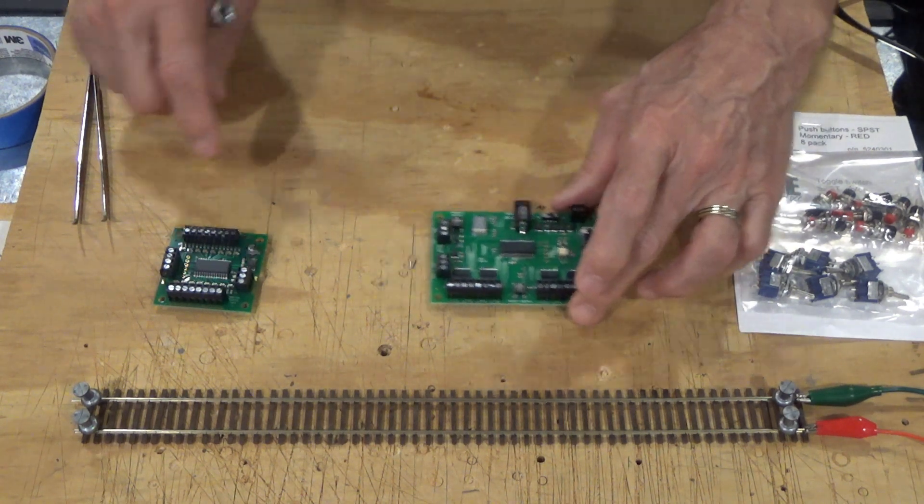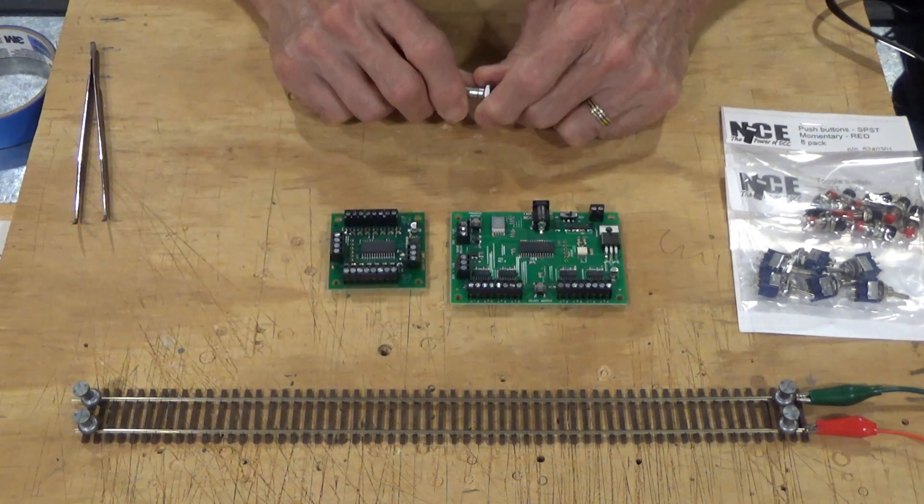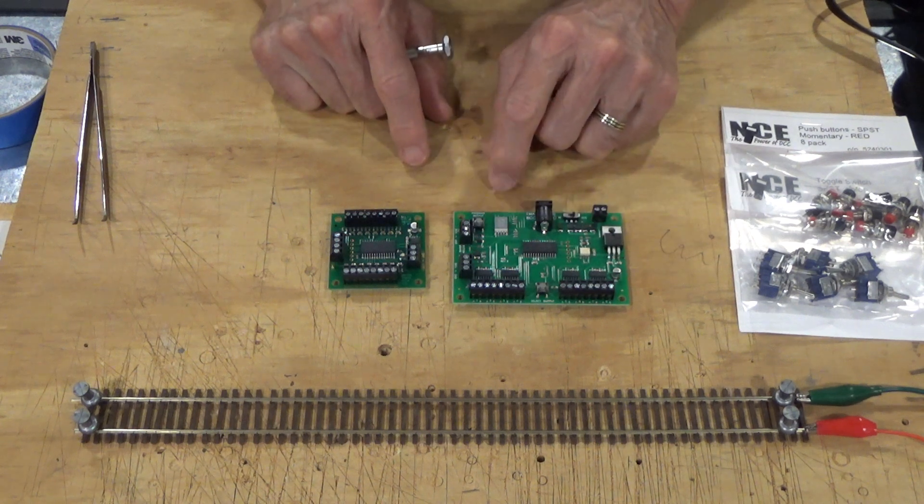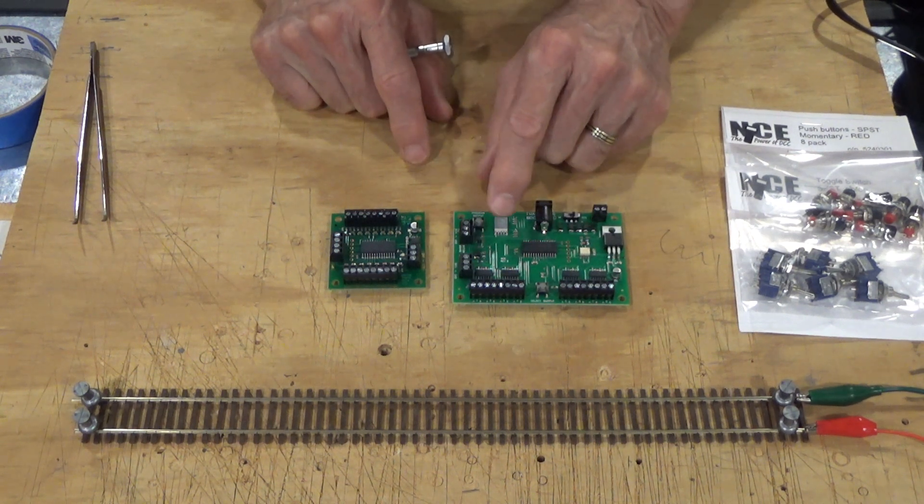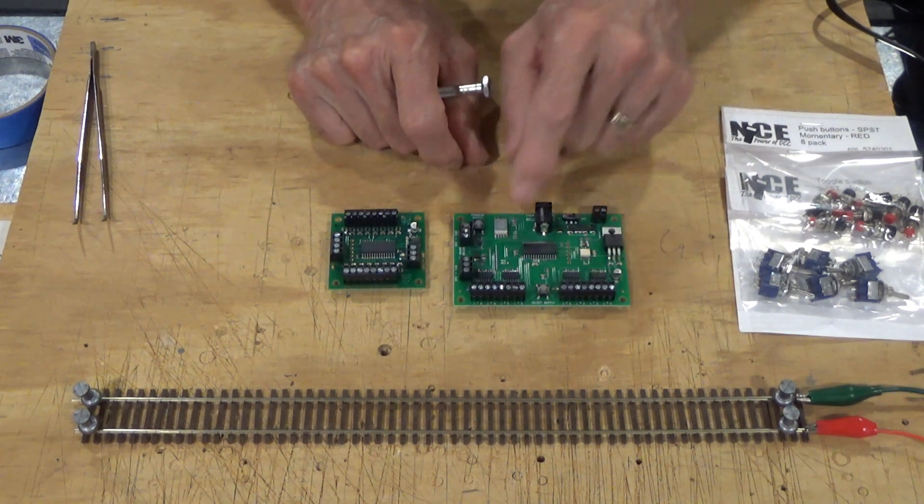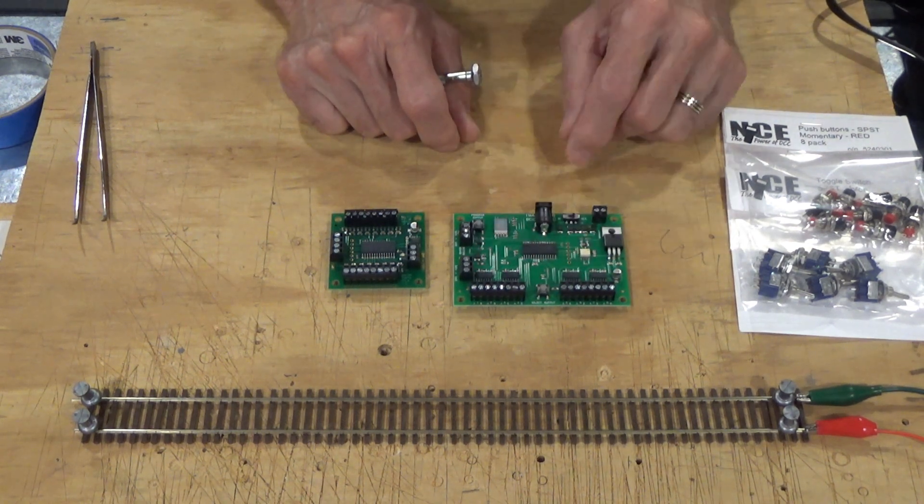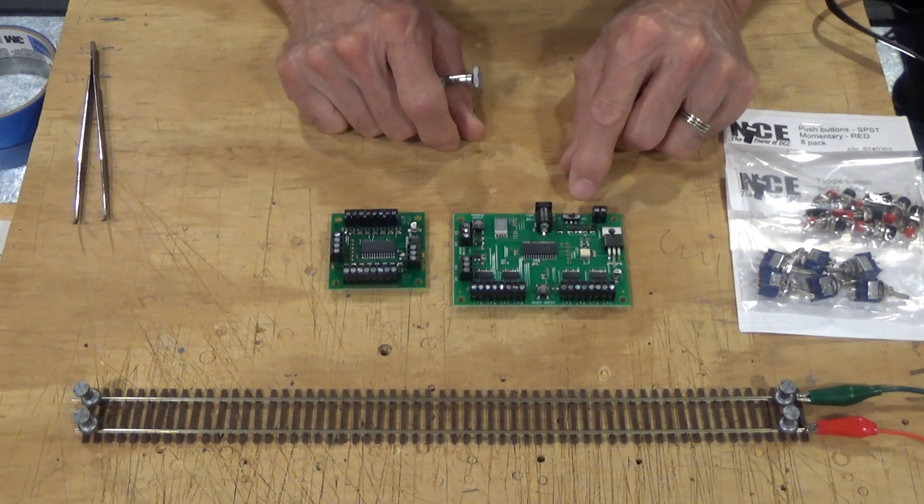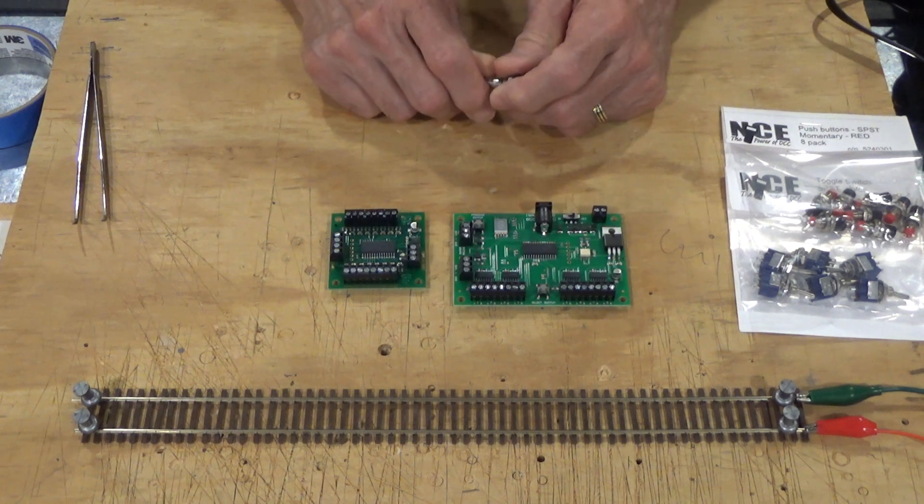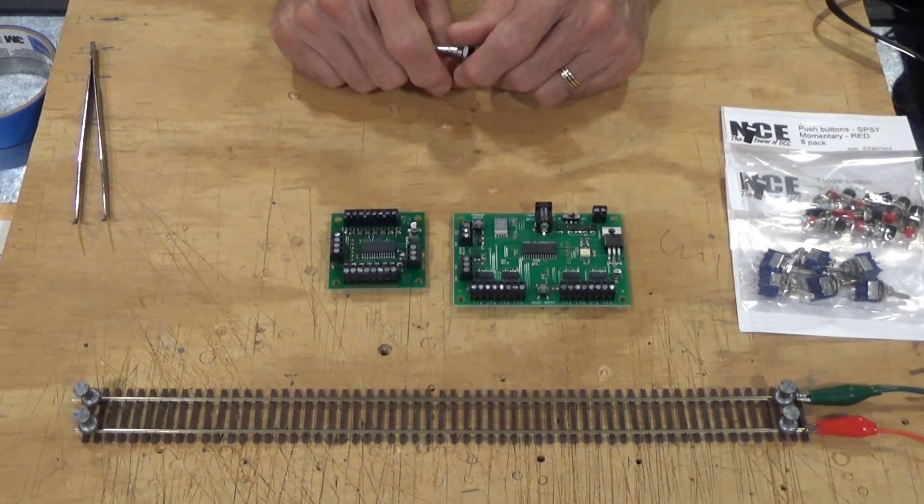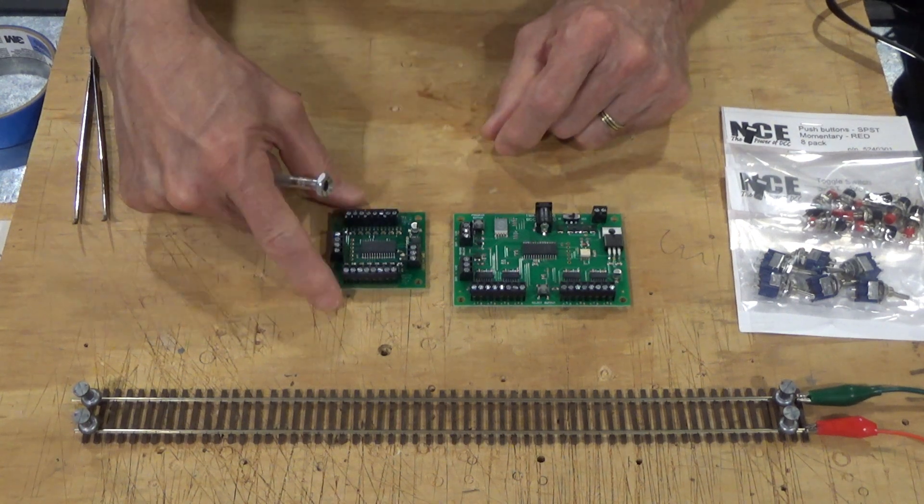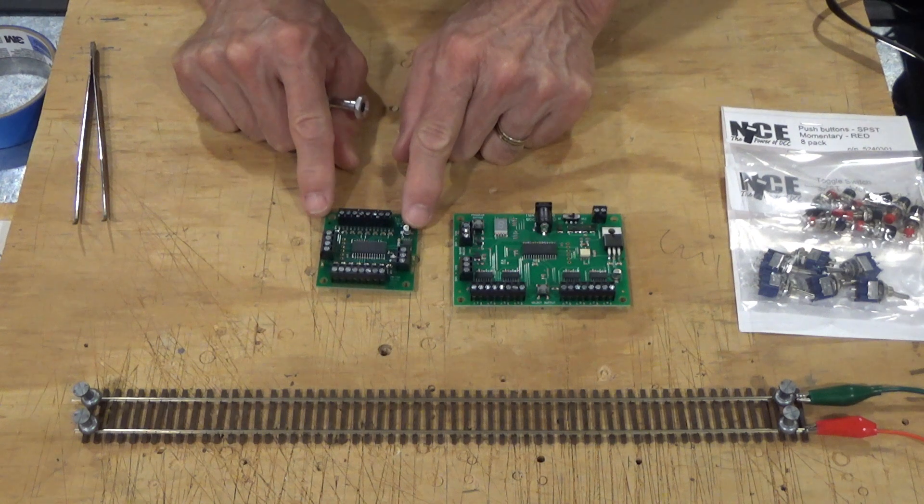The other component I have here is called the button board. In its default state, the Switch 8 is programmed to work with toggle switches to control your turnouts. It can also be used with DCC power and a throttle or computer or your command station to control these. So you have the option of using it with or without toggle switches or push-button switches. In order to use the switches, you have to have this button board.